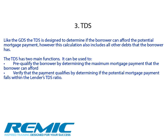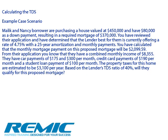Section 3: Total Debt Service, or TDS. Similar to the GDS, the TDS is designed to determine if the borrower can afford the potential mortgage payment; however, this calculation also includes all other debts that the borrower has. For a list of examples of these debts, please consult the manual on page 13. The TDS also has two main functions: it can be used to either pre-qualify the borrower by determining the maximum mortgage payment they can afford, or verify that the payment qualifies by determining if the potential mortgage payment falls within the lender's TDS ratio. The following scenario illustrates how to calculate the Total Debt Service, and can also be seen on pages 15 and 16 of the manual. Please pause the presentation, read through the scenario, take any notes you might need, and then move on to the next slide.